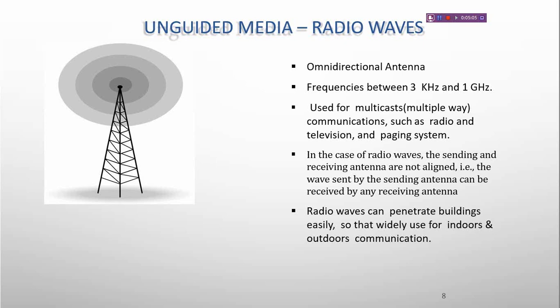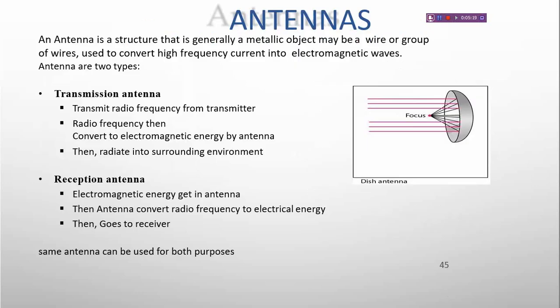Radio waves can penetrate walls easily, so they are widely used for both indoor and outdoor communication. An antenna is a structure — generally a metallic object, may be a wire or group of wires — used to convert high-frequency current into electromagnetic waves.